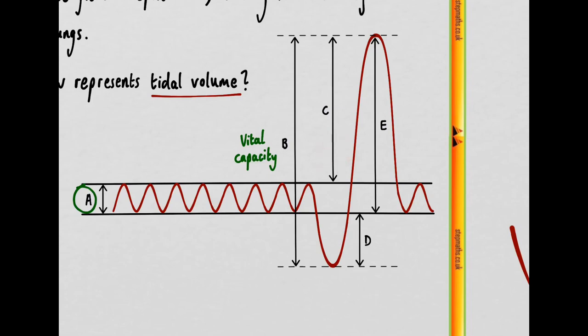Moving on to C, this only refers to the extra amount of air breathed in during extra effort so this is termed the inspiratory reserve which can then be accessed if you apply extra effort through the contraction of muscles of the thorax.